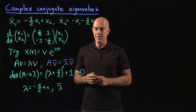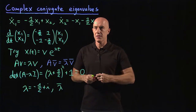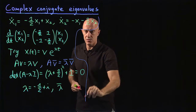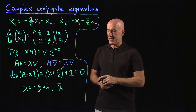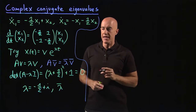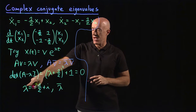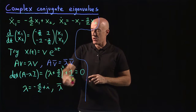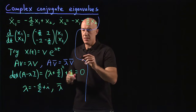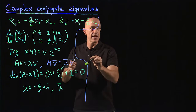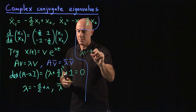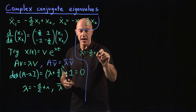So now we need to find the eigenvectors. But we actually only need one eigenvector, because the other one is just the complex conjugate. So let λ equal −1/2 + i.